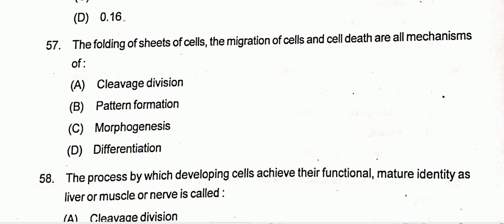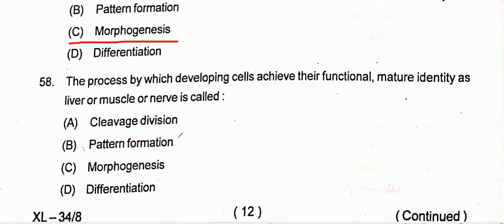Question number 57: The folding of sheets of cells, the migration of cells, and the death of cells are mechanisms of morphogenesis. Option C is the correct one.